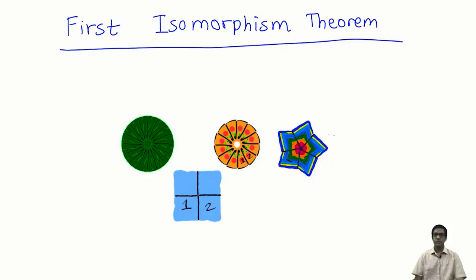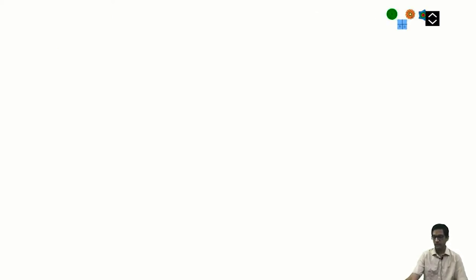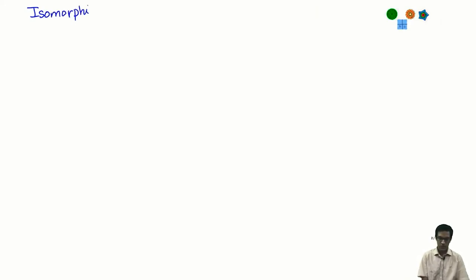Let us talk about the first isomorphism theorem today. Before that, let me tell you what isomorphisms are. We have talked about homomorphisms so far. So what is an isomorphism of R-modules? Suppose I have two R-modules M and N, where R is some fixed ring — both are left modules over a given ring.